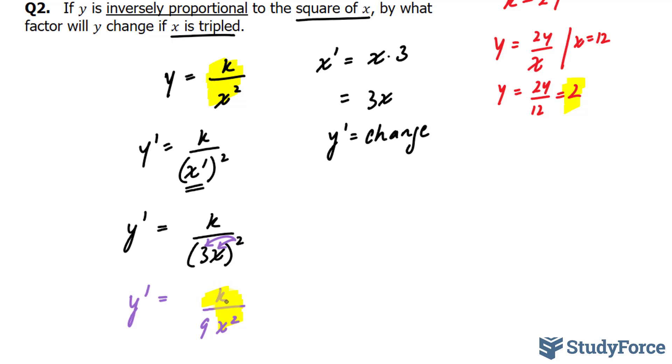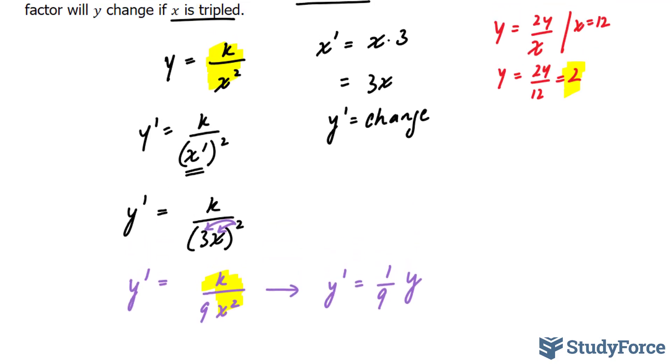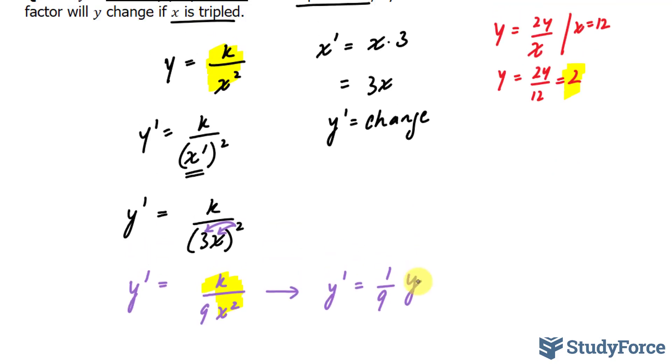I can replace k over x squared with simply y, where I get y prime equals 1 over 9. This tells us that if I triple x, my original y will be multiplied by a factor of 1 over 9. That is how my original y will change.